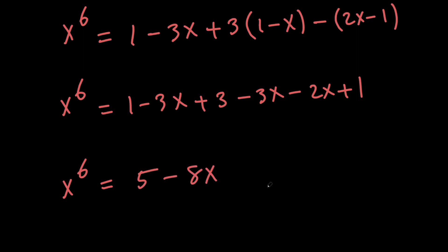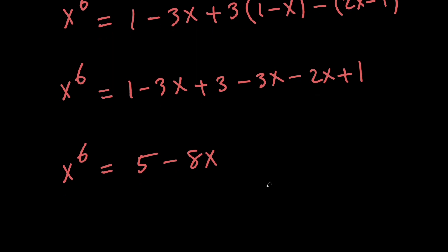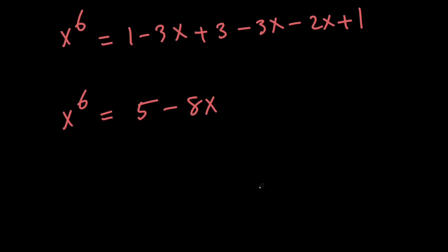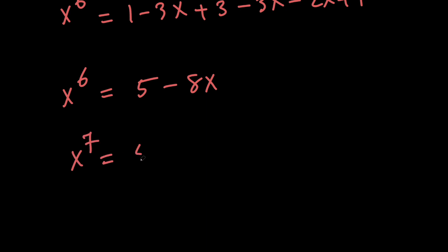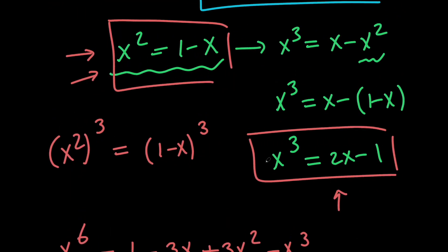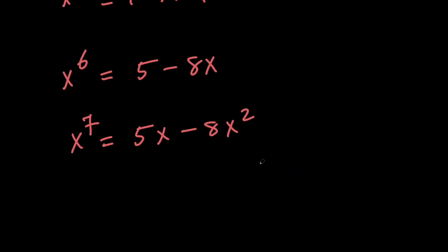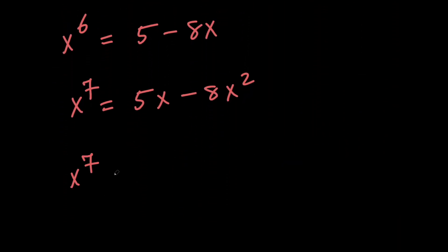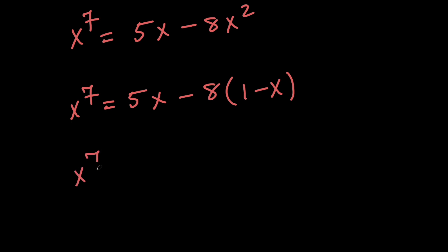Now, remember that we wanted to evaluate x to the power of 7, so let's go ahead and multiply everything by x to get x to the power of 7 equals 5x minus 8 times x squared. But remember that x squared equals 1 minus x, so x to the power of 7 equals 5x minus 8 times the quantity 1 minus x, which means that x to the power of 7 equals 5x plus 8x, which is 13x minus 8.